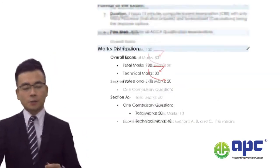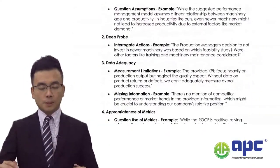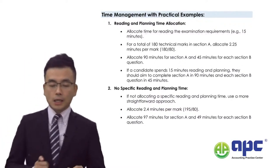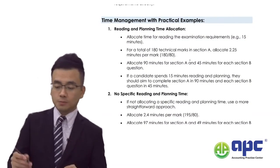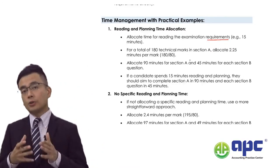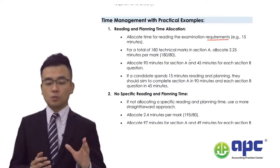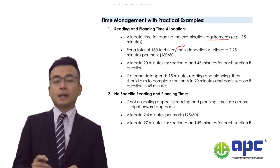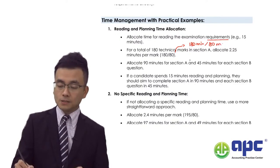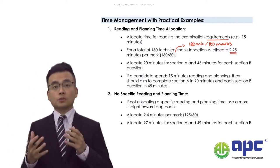It's very important that you notice the time management. I'll take you through time management before we dive into the professional skills. You need to allocate time to plan the requirement. If you use the first 15 minutes to read the requirements and plan your answer, that would be a good starting point, especially for question one. In that case, the number of minutes allocated to each mark will be 180 minutes divided by 80 technical marks — 2.25 minutes per mark. Make sure you plan your time using a deadline.